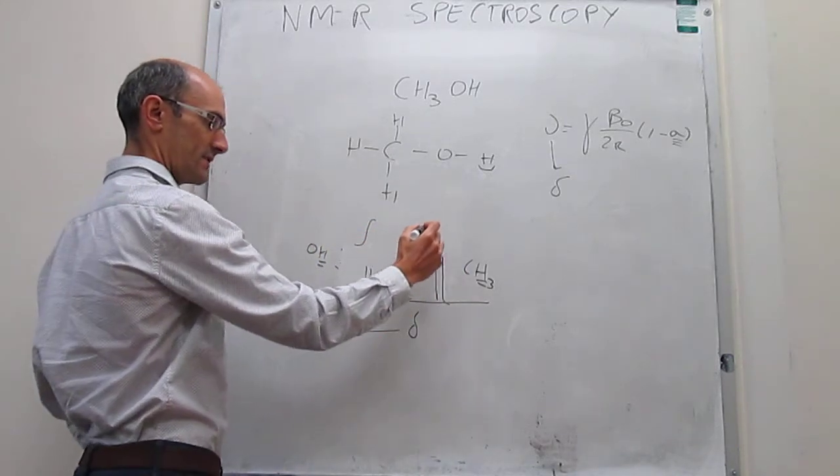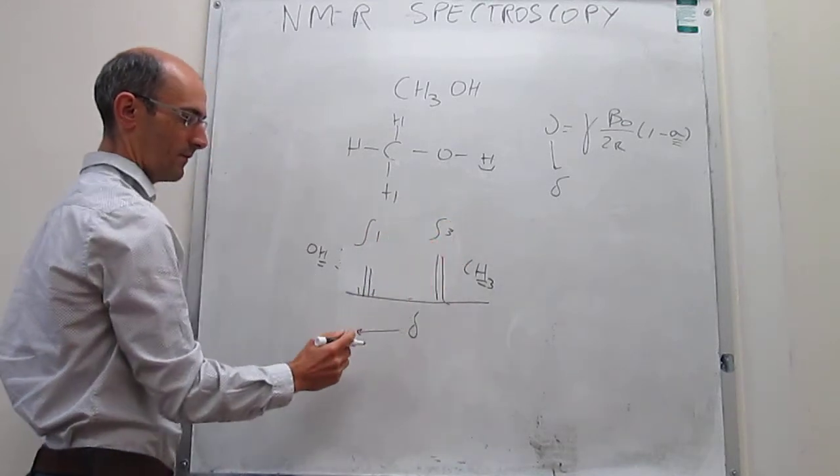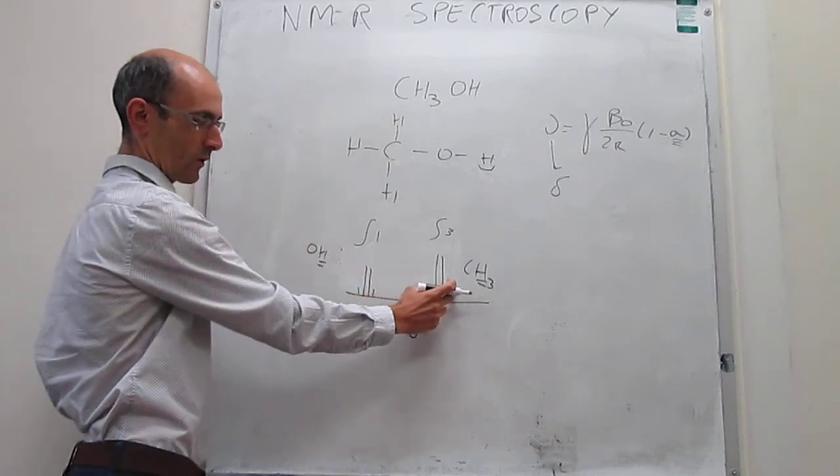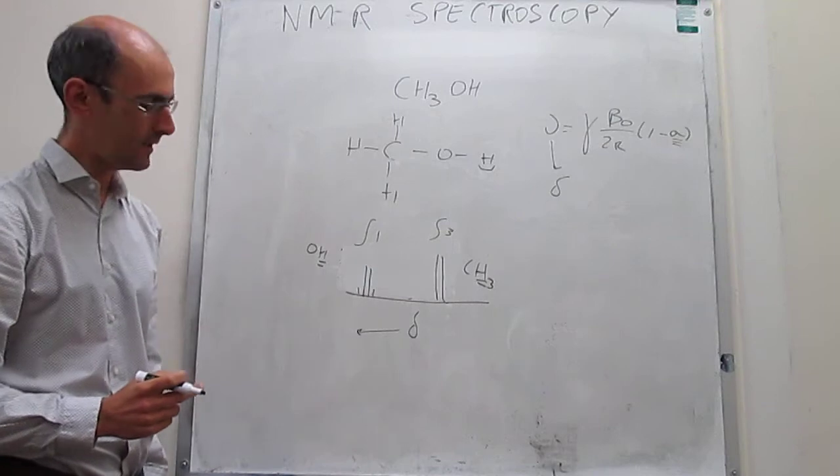Again, if we integrate these areas still, that is going to be one to three. But notice that this has two peaks and this one has four. So we call this a doublet, two peaks. We call this a quartet, four peaks.